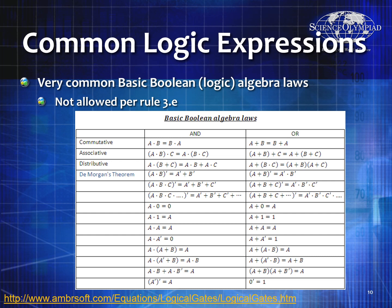If you look at DeMorgan's theorem: NOT of A AND B — or a NAND — is equal to NOT A OR NOT B. On the OR side, because all these things have a duality: A OR B with the entire expression NOTed — or a NOR — is equal to NOT A AND NOT B.